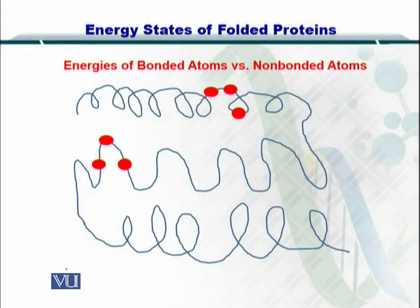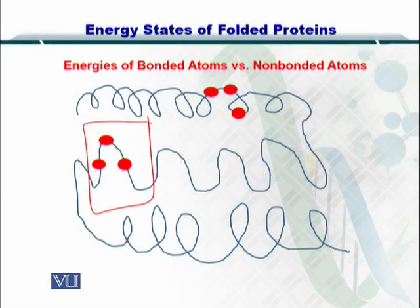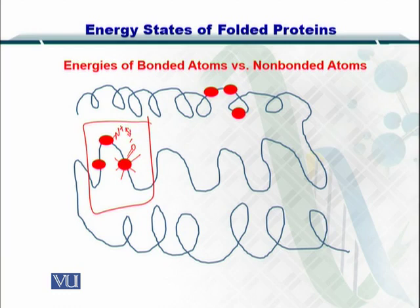Here I have a cartoon of a protein which comprises one alpha helix, some anti-parallel beta sheets, one alpha helix, and a second helix. Let's consider these three amino acids — each amino acid is composed of multiple atoms. If there is a net positive and negative interaction between these atoms, they are going to make a hydrogen bond. As a result of the formation of such hydrogen bonds, energy is released.